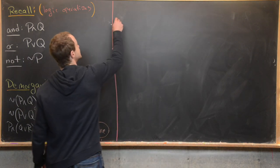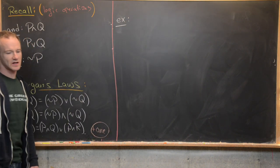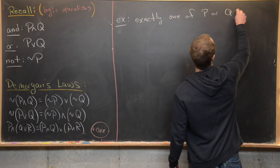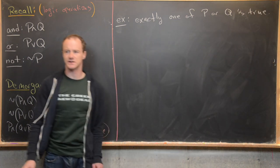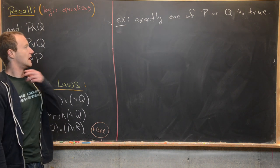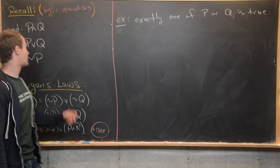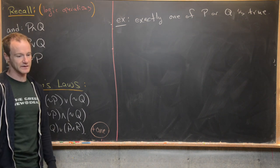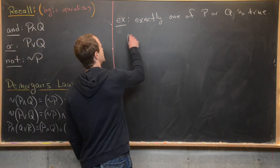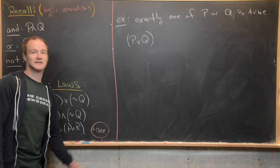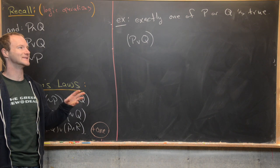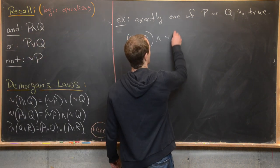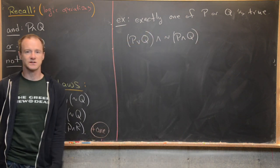Let's look at an example: create a logical operation that's true when exactly one of P or Q is true — an exclusive OR. We don't have a single operator for this, because our OR is not exclusive: P and Q can both be true and still give true. So we want: P OR Q — meaning at least one is true — AND we want to eliminate the case where both are true, so we AND with NOT(P AND Q).